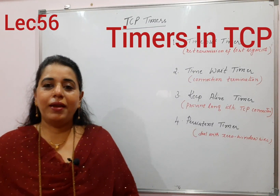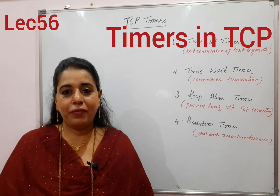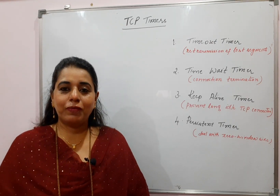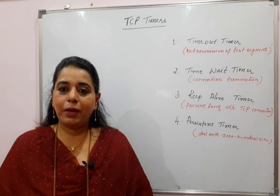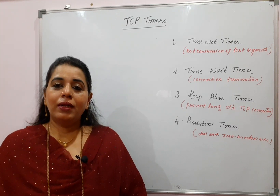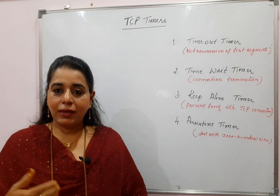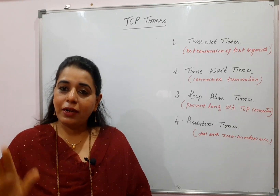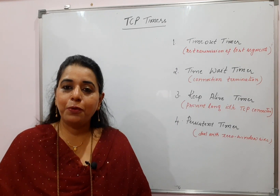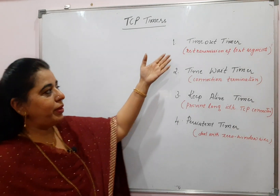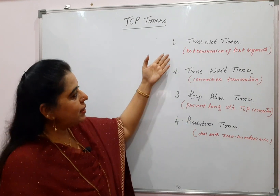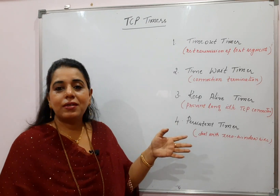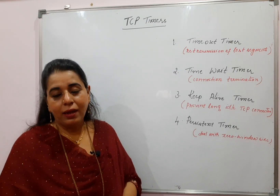Hello viewers, welcome back to my channel. In today's session, I shall be discussing the different timers used in TCP. In my previous video session, you would have come across one type of timer called the retransmission timeout. Not only that timer, there are different timers in TCP used under different situations. Those timers I have mentioned here in the list: the first one is timeout, the second is time wait, keep alive, and persistent timer. Under which situations these timers will be used, I shall be explaining in today's session.